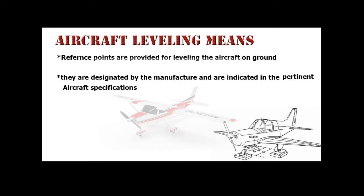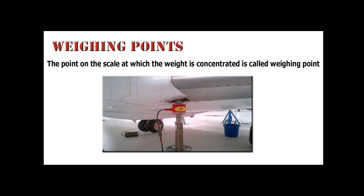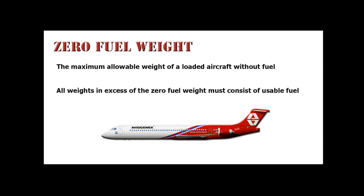Aircraft Leveling Means: Reference points are provided for leveling the aircraft on the ground. They are designated by the manufacturer and indicated in the pertinent aircraft specification. The most common leveling procedure is to place a spirit level at designated points on the aircraft structure. Some aircraft have special leveling scales built into the airframe, used with a plumb bob to level the aircraft longitudinally and laterally. Weighing Points: The point on the scale at which the weight is concentrated is called the weighing point, and it should be clearly indicated in the weight and balance sheet.